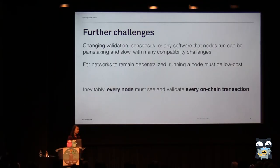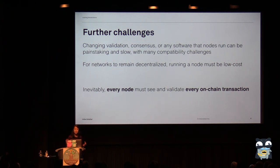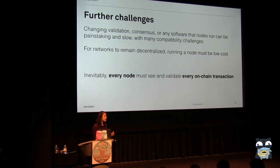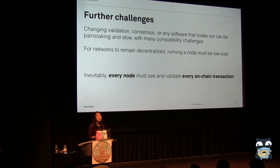Also, if we want networks to be decentralized, it needs to be low cost to run a node. The spirit of decentralized networks is that it's not just some big company running on huge servers maintaining this service — it's people running Bitcoin or Ethereum or Stellar nodes on their laptops, on all different kinds of hardware. But fundamentally, the blockchain scaling problem is that every node needs to validate every transaction.